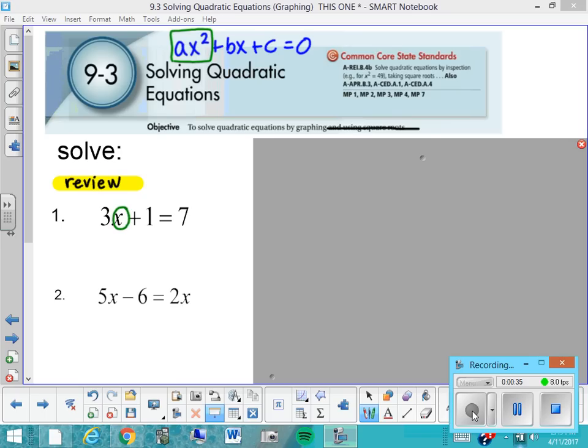Say to yourself, well, what does x have to be in order for, if I multiply x times three and then add one, I get seven. And you could probably just look into it and figure out, well, if x was two, then three times two is six plus one is seven.